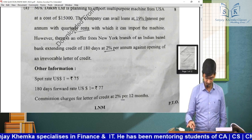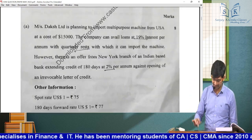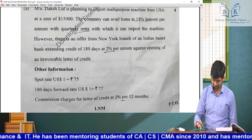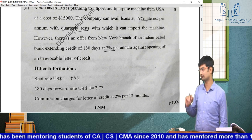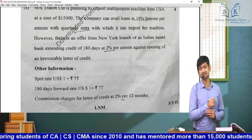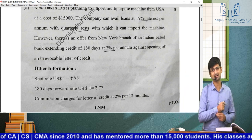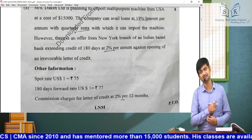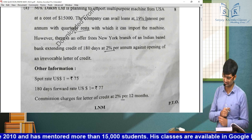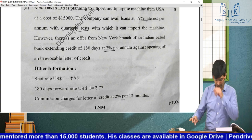Commission charges were given, spot rate was given, forward rate was given. You're paying 2% for 12 months. The question asked: justify why the foreign branch offer should be accepted. The second part said — based on present market conditions, the company does not want to bear the expensive ₹30,000 cost but wants to hedge its currency risk.